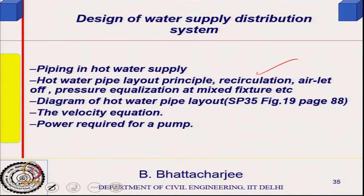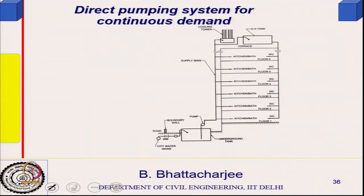Recirculation is the main consideration for hot water pipes. Hot water pipe layout principles: recirculation, air let-off because vapors would generate and create pressure. Therefore, there has to be venting and air let-off, and pressure equalization at mixed fixtures where you are mixing hot and cold — pressure equalization should be there. SP 35 figure 19 on page 88 gives you a hot water supply system diagram and some idea related to power.